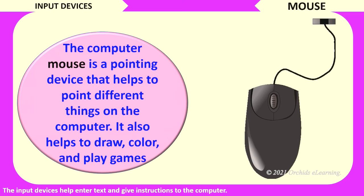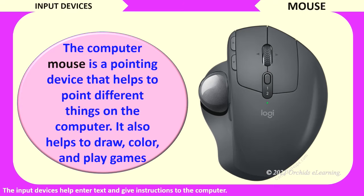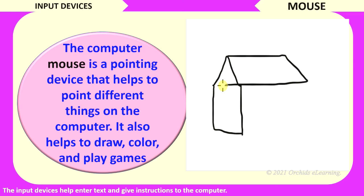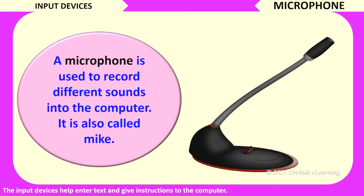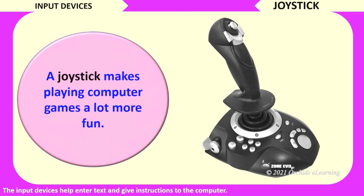Mouse. The computer mouse is a pointing device that helps to point different things on the computer. It also helps to draw, color, and play games on the computer. Microphone. A microphone is used to record different sounds on the computer. It is also called mic. A joystick makes playing computer games a lot more fun.